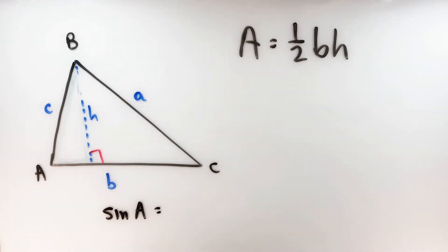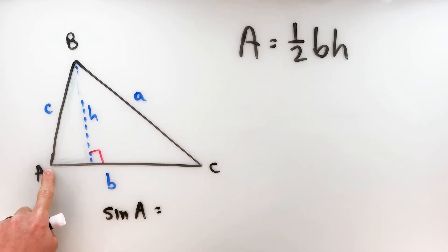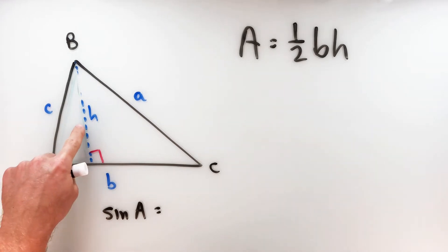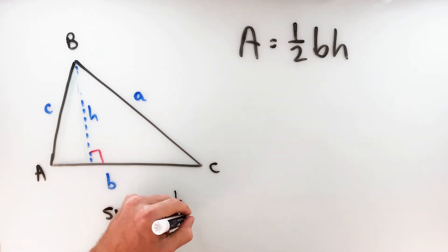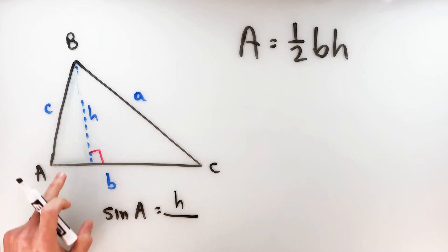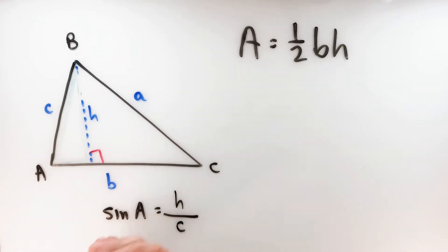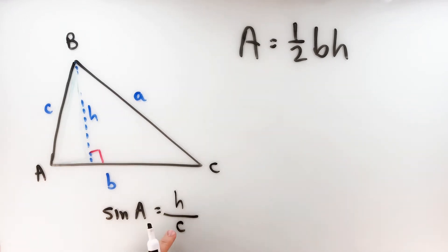So in this little triangle, if this is angle A, what leg is opposite angle A? That would be H over the hypotenuse. In the little triangle, the hypotenuse would be C. So my sine ratio for angle A is H over C.